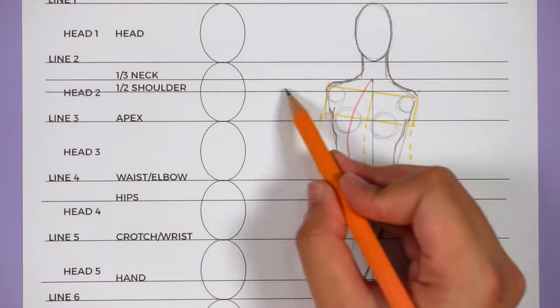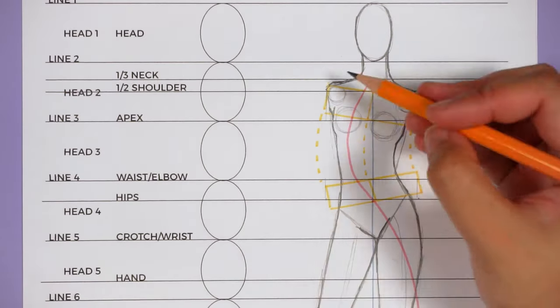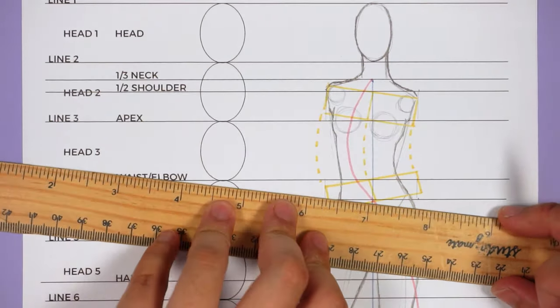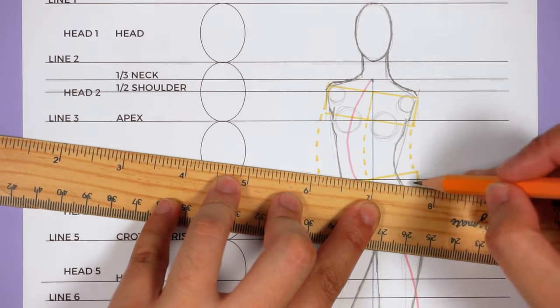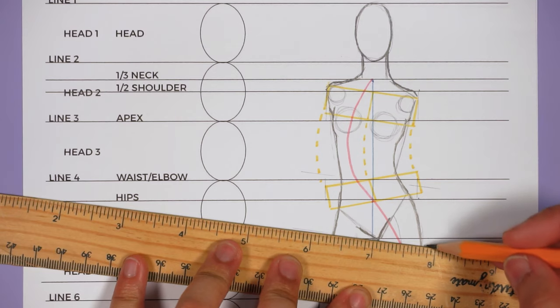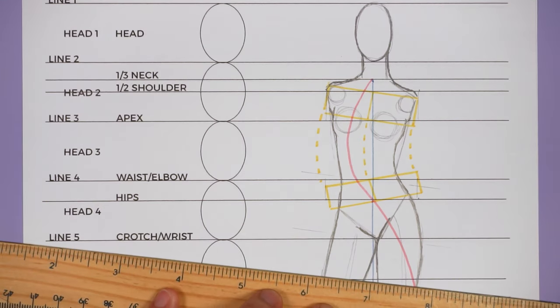Let's first start with the arms. The guidelines for the arms also shift in a moving pose. Firstly, because the arms are connected to the shoulder line. Therefore, if the shoulder shifts, so too do the arms.